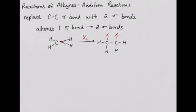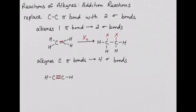Alkynes have two pi bonds, and therefore can be replaced by four sigma bonds. For example, this alkyne has two pi bonds that can be replaced by the addition of two molecules across the bond.